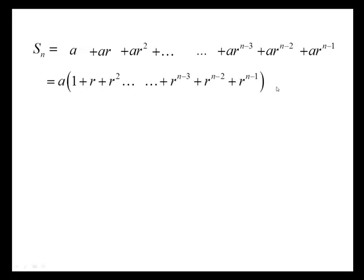Now there's another way to do this, but it does involve knowing a particular form of factorization. Here's our Sn. Let's take the factor of a out from every term and put the rest in a bracket. That's the bracket we're interested in.